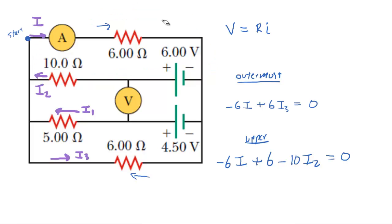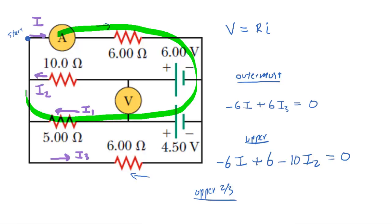We do one more loop rule for the upper two-thirds of this circuit. Going clockwise, we go through the six-ohm resistor — that's the same negative six I. We then encounter a battery going from negative to positive, which is a positive 4.5-volt change. Finally, we go through a resistor with current I1, so that's negative five I1. Returning to start, this is equal to zero. That's our third loop equation.